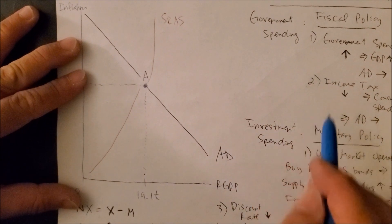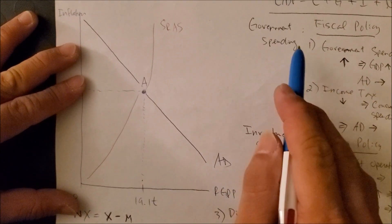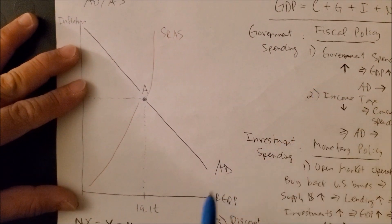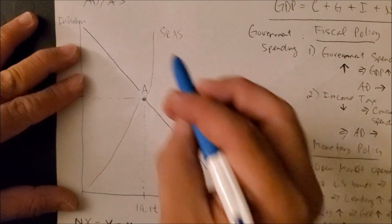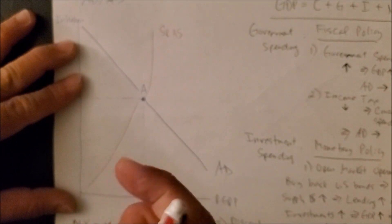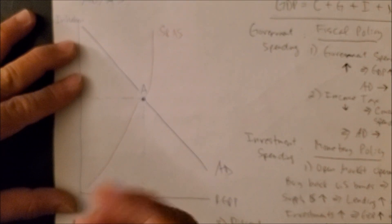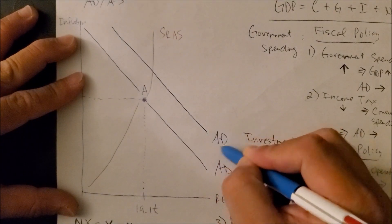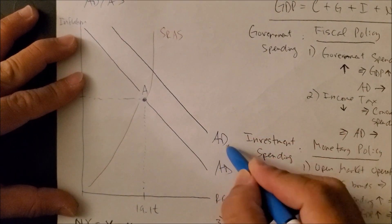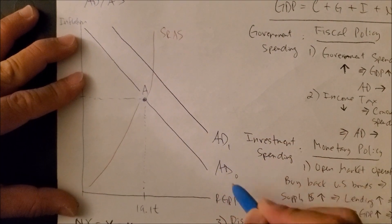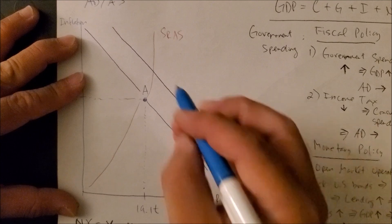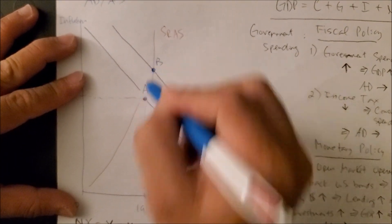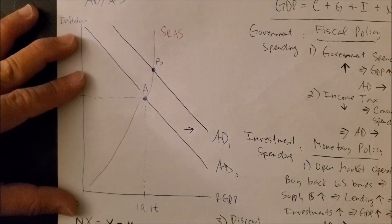So all three components — G, I, and NX — shift the AD curve to the right. This gives us a new equilibrium at point B, with the AD curve shifting rightward representing an expansion in the overall economy.